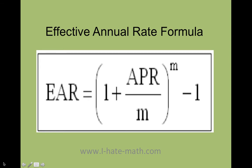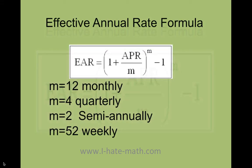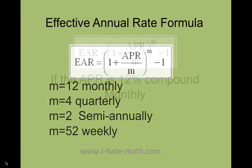Let's do a couple of examples to make this easier. The first thing you need to remember is that when you're compounding monthly, your m is going to be 12; quarterly, 4; semi-annually, 2; weekly, 52; and daily, 365. These are the most common compound terms that we use in finance.